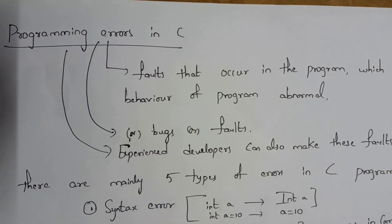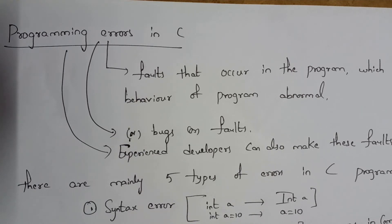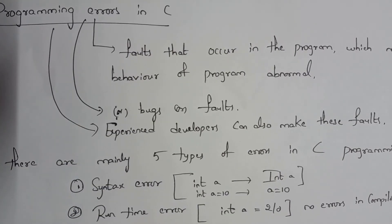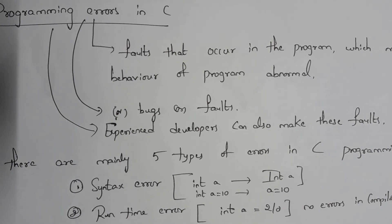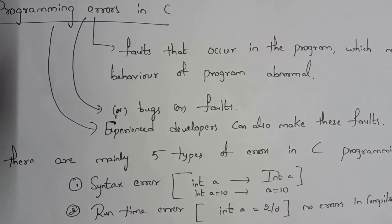Next I will explain programming errors in C. Any fault that occurs in a program which makes the behavior of the program abnormal is known as a programming error. We also call this a bug, fault, or mistake. Even experienced developers can make these errors. There are five types of errors in C.